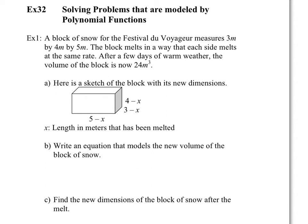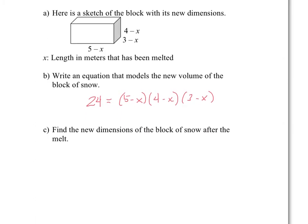Part A: here's a sketch of the block with its new dimensions. You have five, and it's going to melt by X; three is going to melt by X; and four is going to melt by X. So X is the length in meters that has been melted, which is basically what we need to find. Write an equation that models the new volume of the block of snow. The new volume is 24, and 24 equals the three lengths multiplied together — length times height times width — so we have (5 − X)(4 − X)(3 − X). This is the equation for the volume of the melted block of snow.